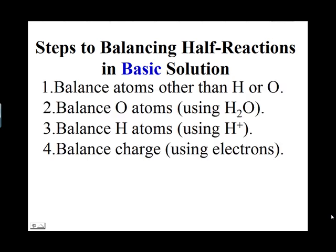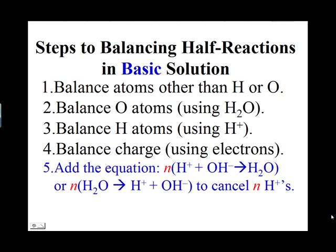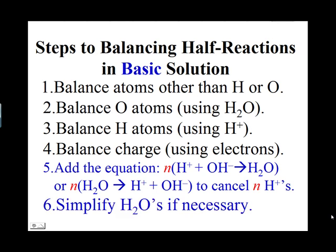Balance atoms other than hydrogen or oxygen, then oxygen atoms, followed by hydrogen atoms, and then net charge. In the fifth step, cancel any H+ ions present by adding the equation H+ + OH⁻ → H2O, multiplied by the coefficient N of H+ in the original equation. After adding these equations, if water molecules appear on both sides, simplify by subtracting the smaller number from both sides.